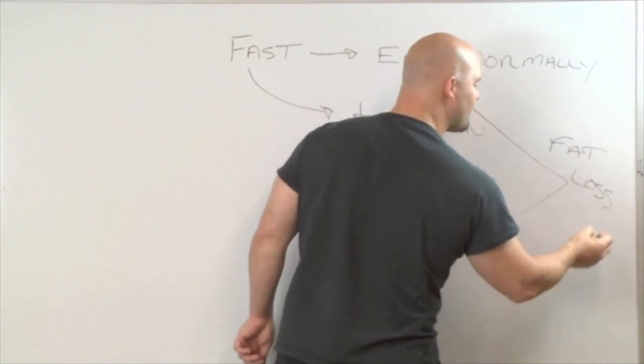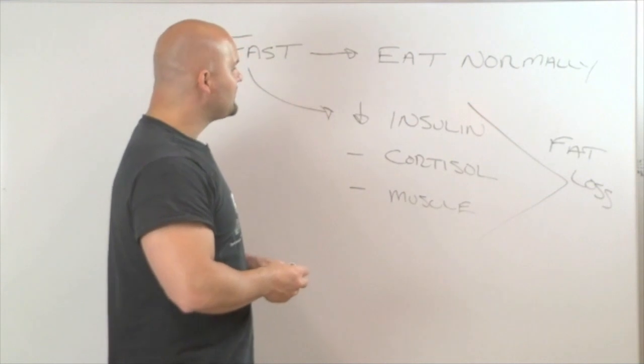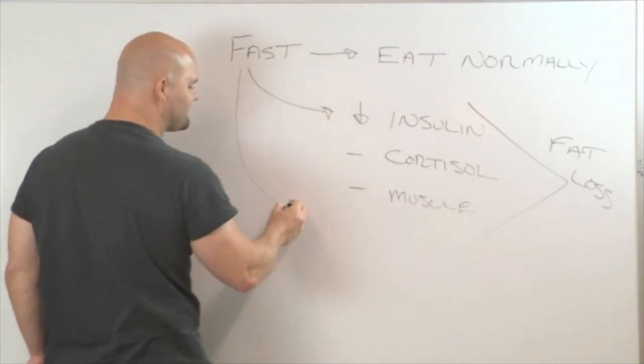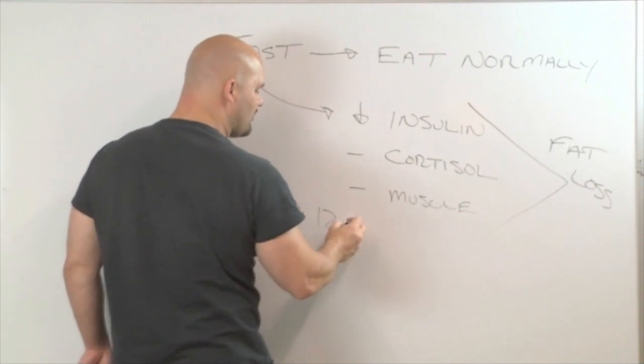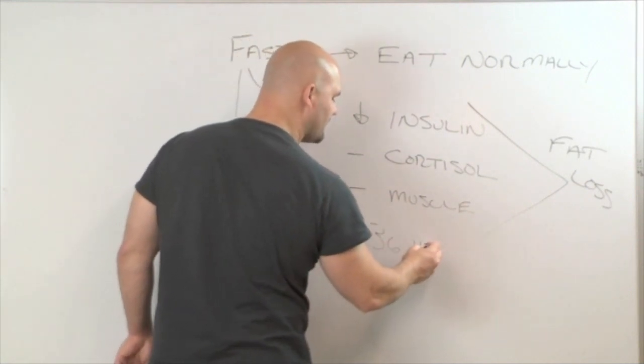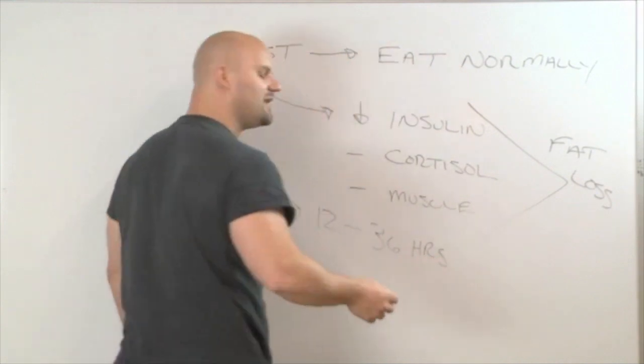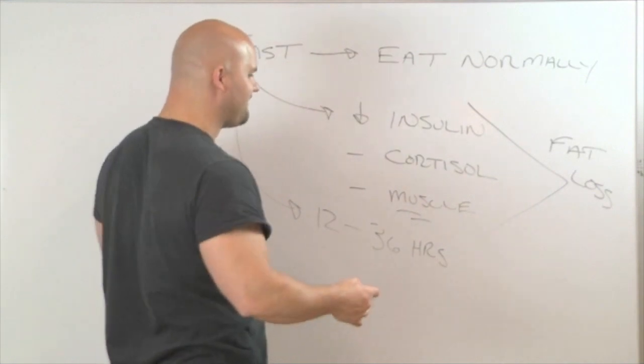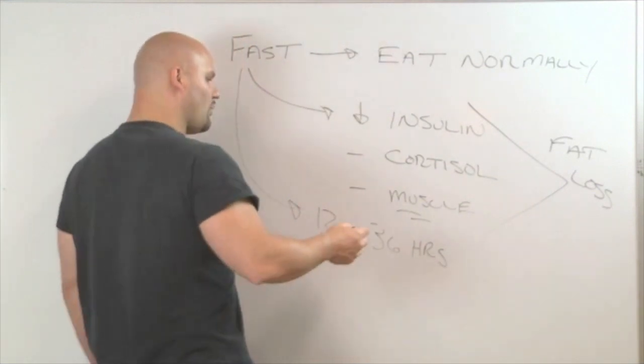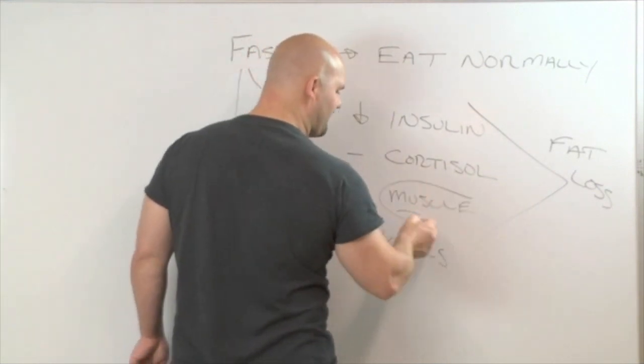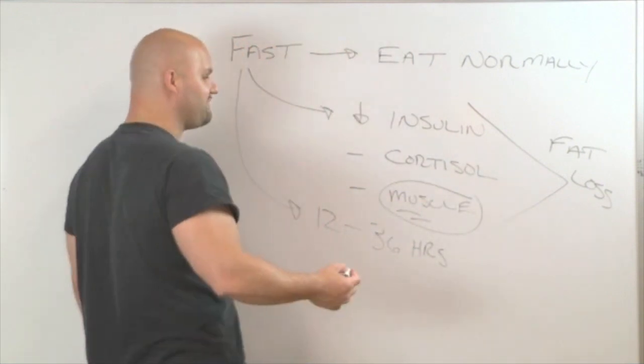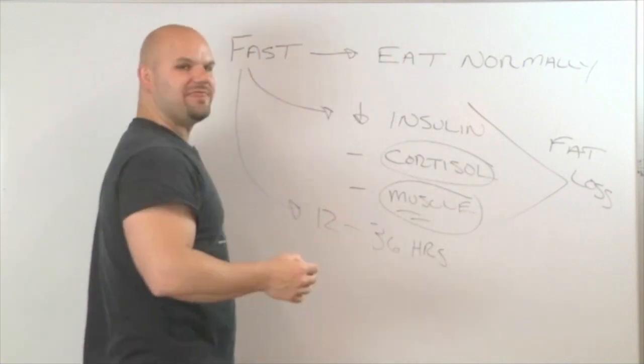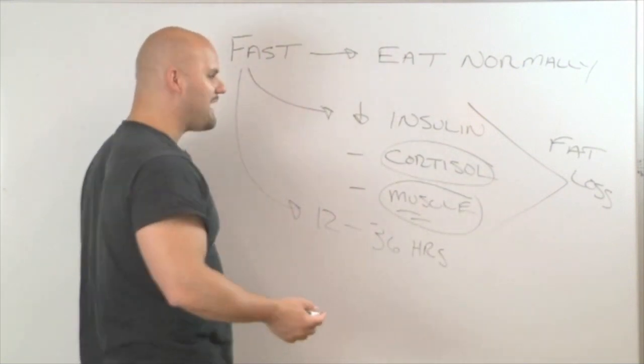So these protocols can work pretty good. And the truth of the matter is that the shorter the fast, a fast lasting, you know, 12 to 36 hours, usually is not going to be long enough to see too much of these muscle wasting effects. So really, what we're looking at is if we can keep the fast short, short duration fast, we don't need to worry so much about anything regarding muscle because we can easily put that muscle back on.